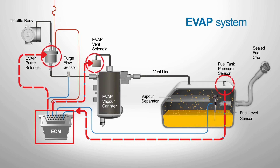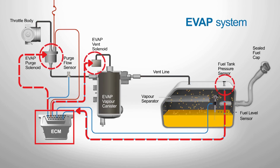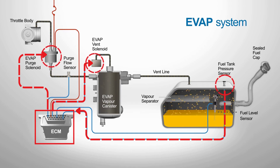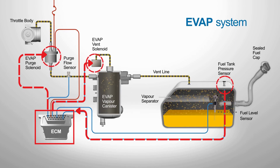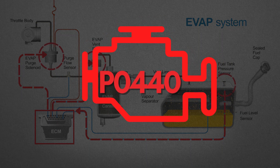If the ECM detects a drop in pressure or vacuum that exceeds acceptable limits, it assumes there's a leak somewhere in the EVAP system. Depending on the size of the leak, the ECM stores a specific code. A large leak is recorded as P0440.